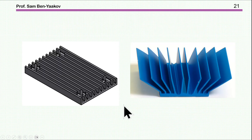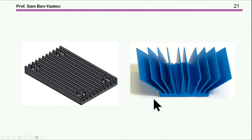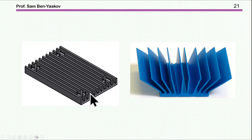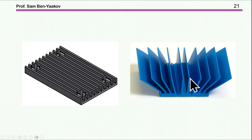You can get heatsinks of very many shapes. A heatsink with a much larger surface area has a much lower thermal resistance than a compact one. Consequently, you can get by with a much lighter heatsink when surface area is large, whereas a larger thermal resistance requires more weight. The conclusion is that it is better to get a heatsink with as large a surface area as possible.